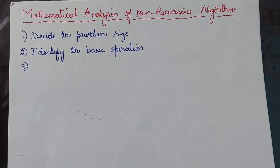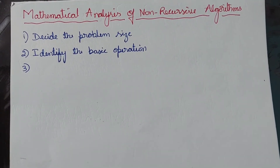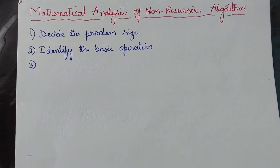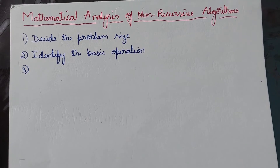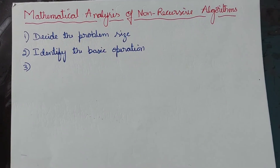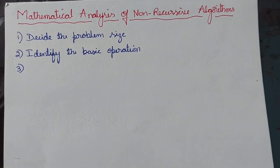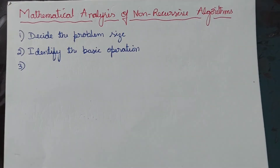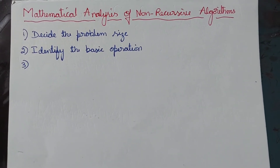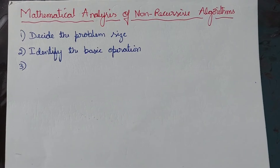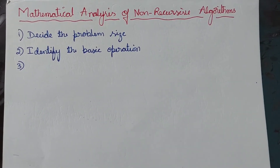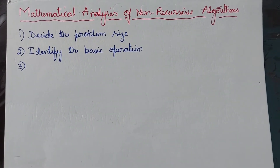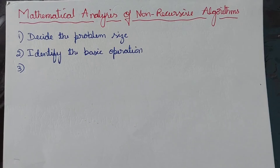The second step is to identify the basic operation. The basic operation is the operation which is consuming more time compared to other statements of the algorithm. Not all statements execute the same number of times — the statement executing more times takes more time. The operation consuming the most time compared to others is called the basic operation.